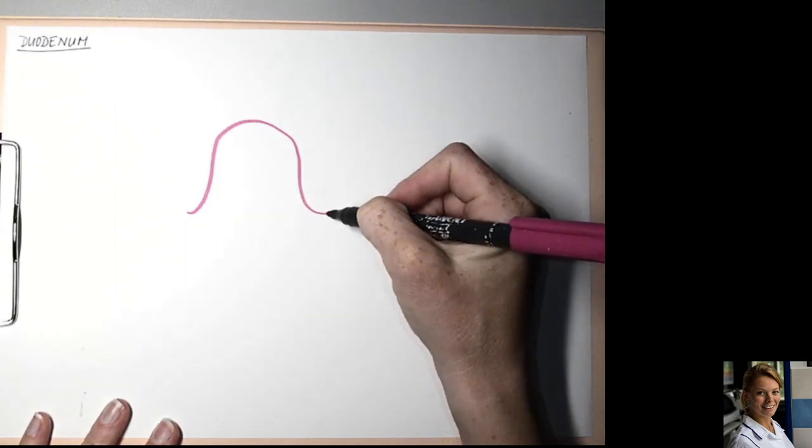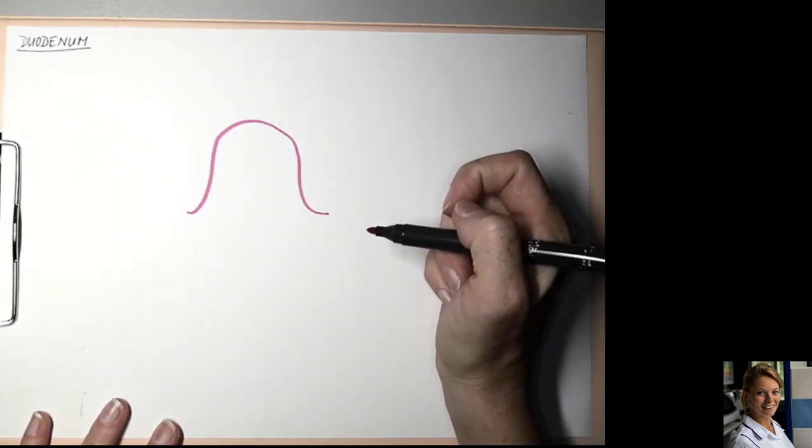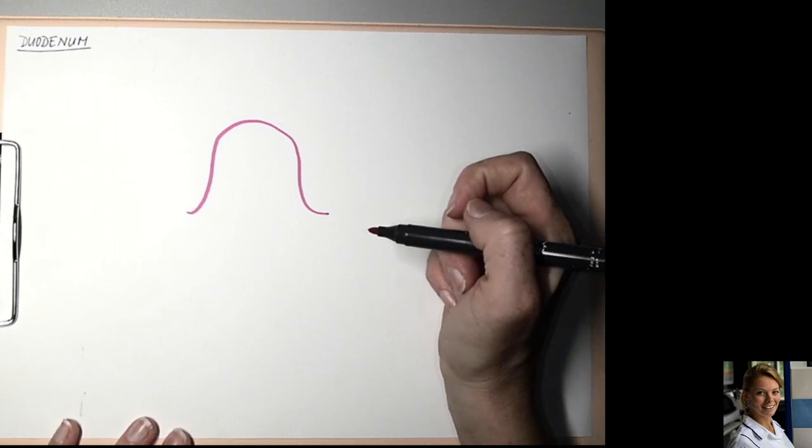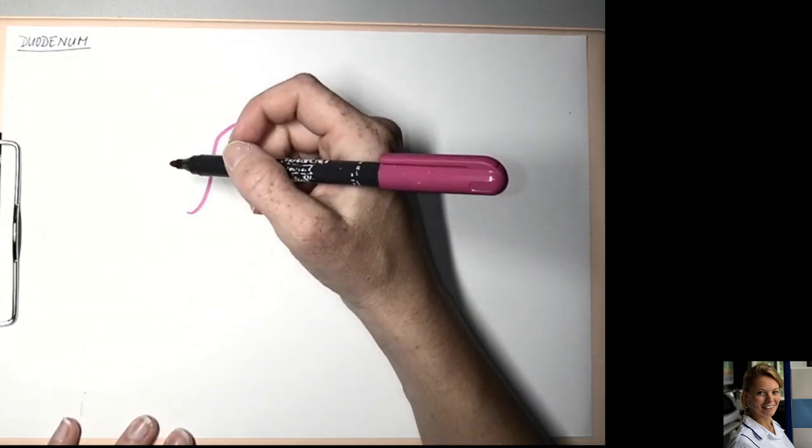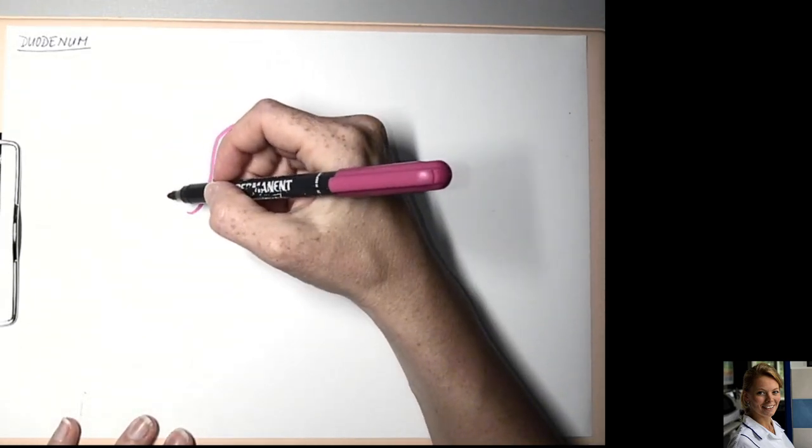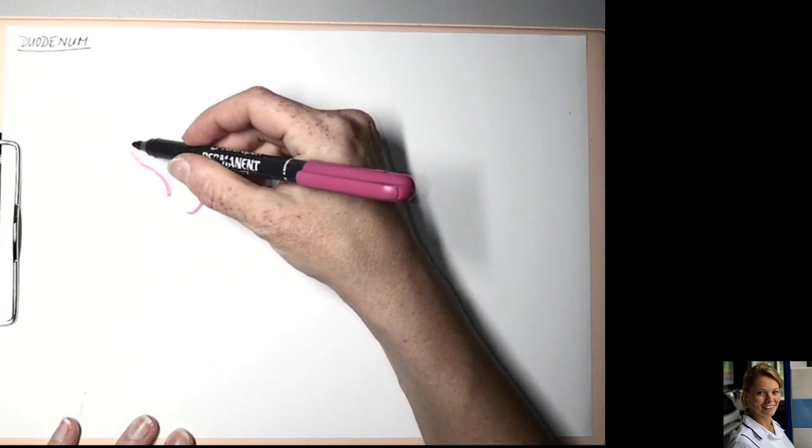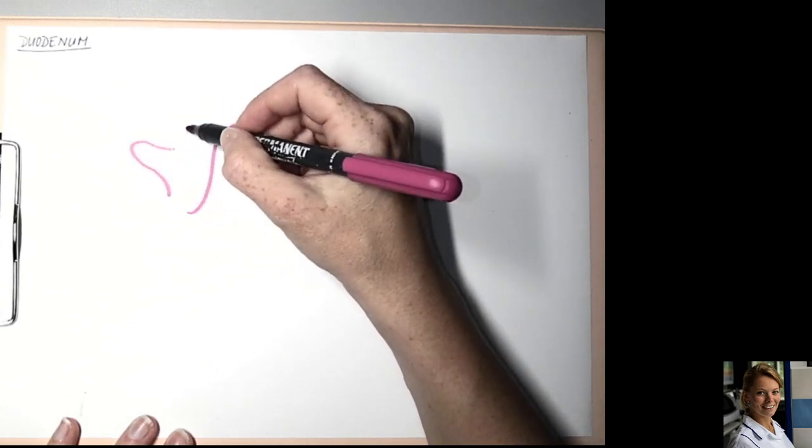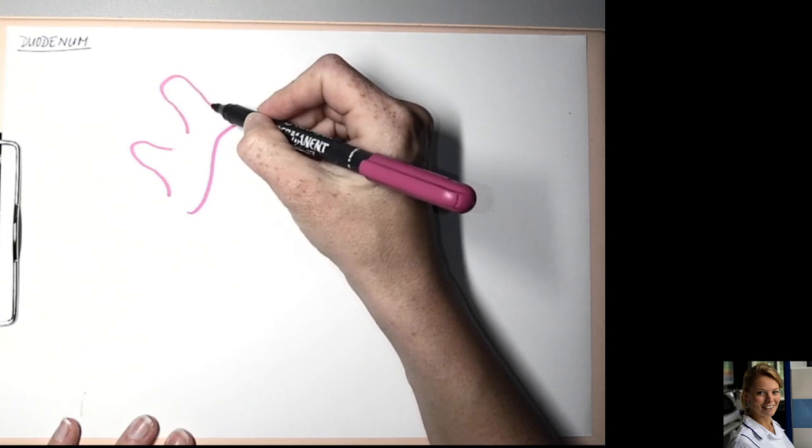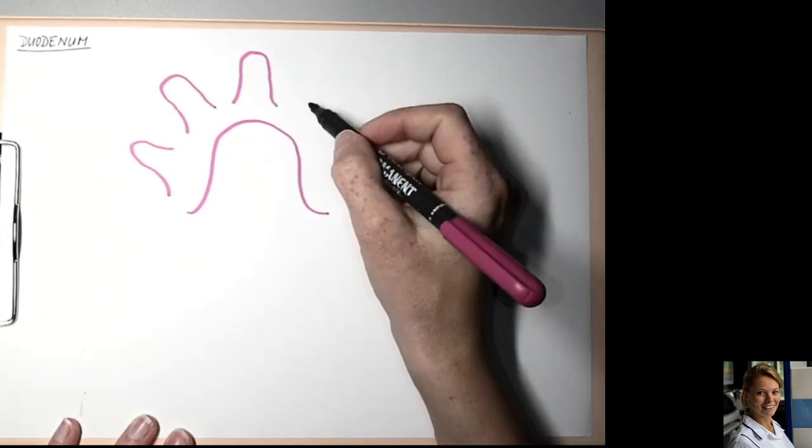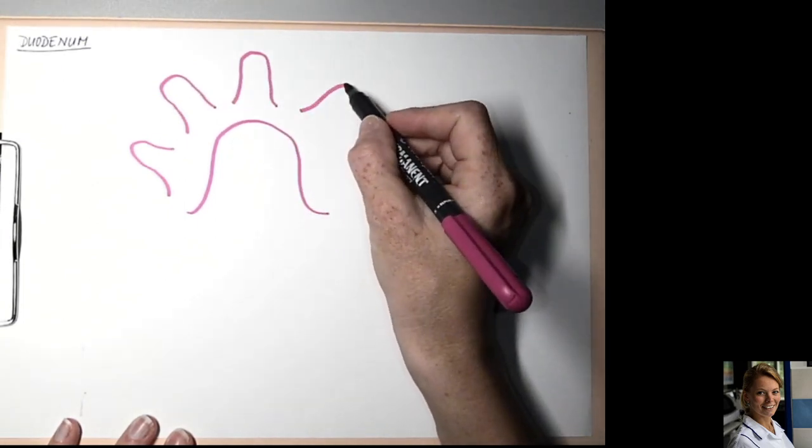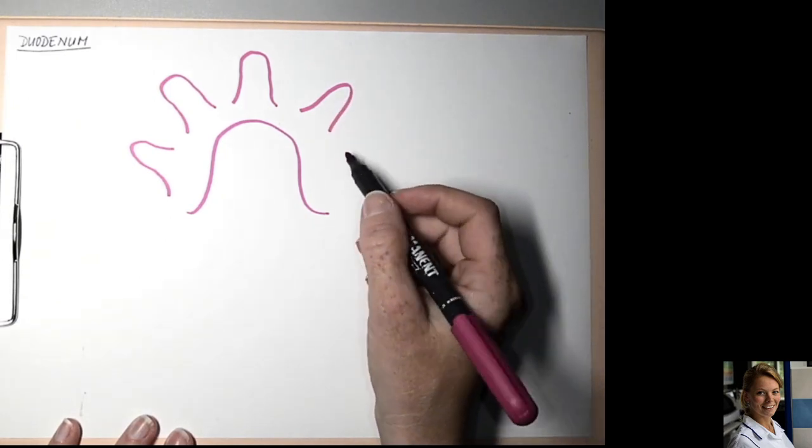Secondly, there are intestinal villi. These are mucosa projections from epithelium and loose connective tissue called lamina propria. They have a finger-like appearance.